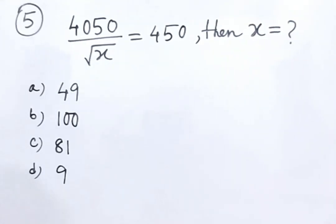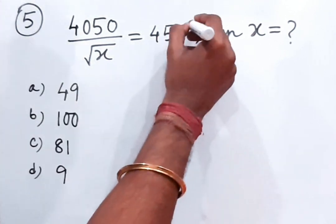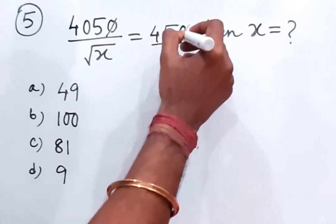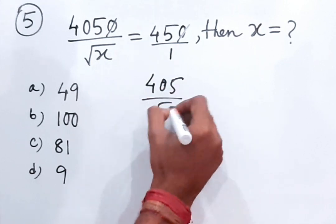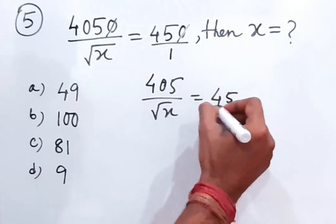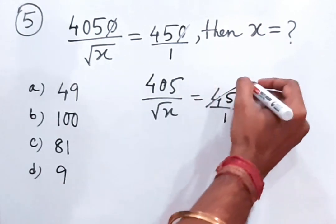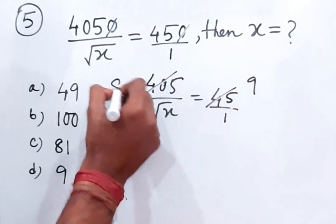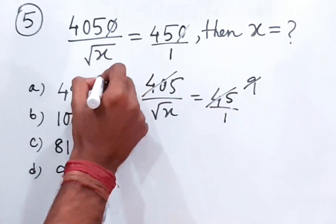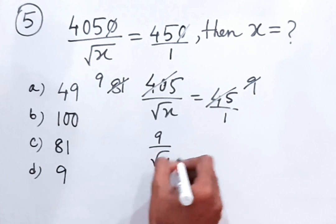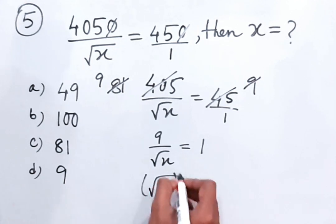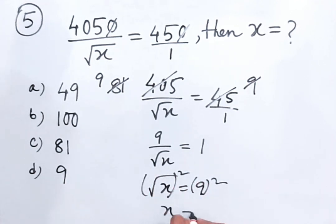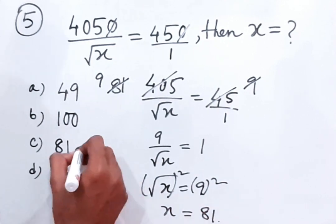Next question: 4050/√x = 450. We can cancel the zeros, giving 405/√x = 45. Dividing both by 5 gives 81 and 9, so 9/√x = 1, meaning √x = 9. Squaring both sides gives x = 81. So C is the answer.